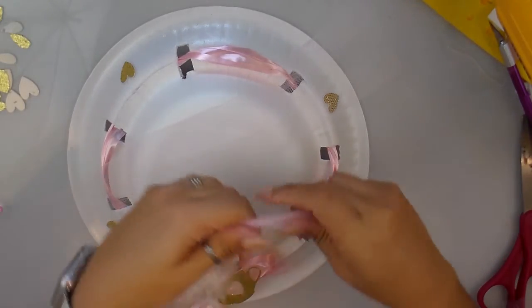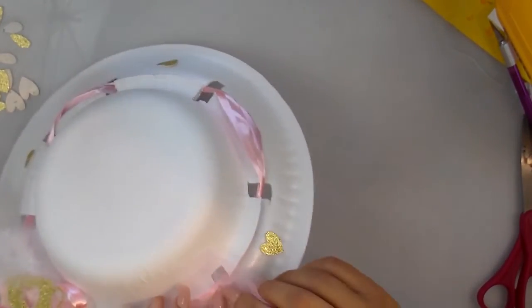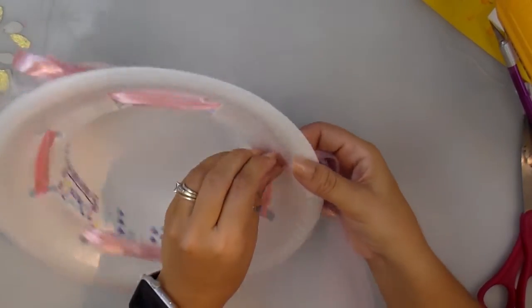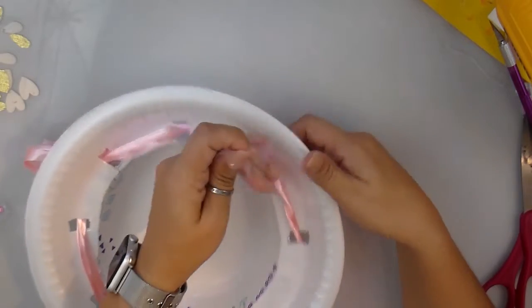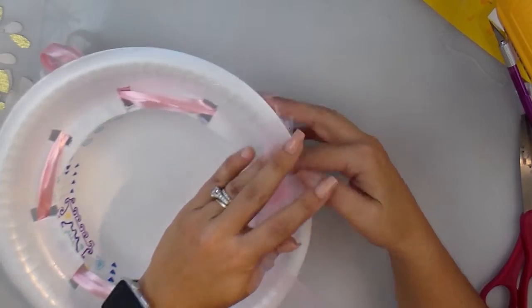And I got a little pink tulle. I'm cutting two pieces the same, like two pieces probably about 20 inches long, and I'm going to go on both sides of the hole and I'm going to tie a knot.